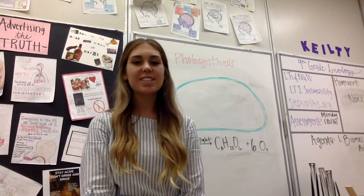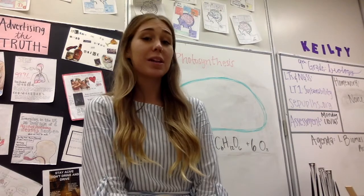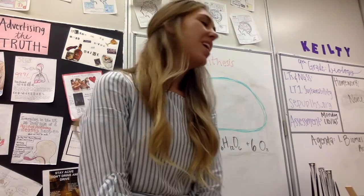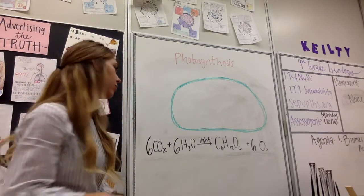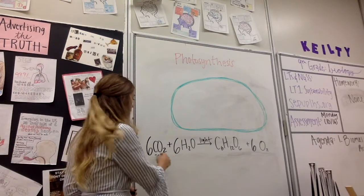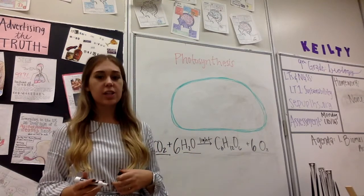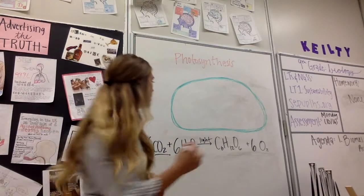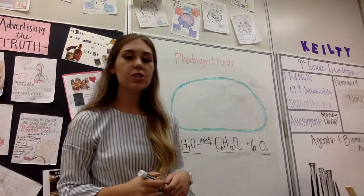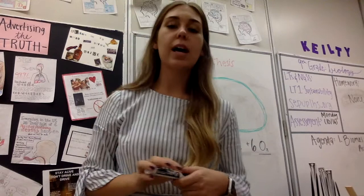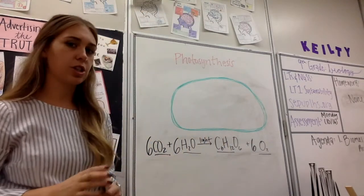We're finally getting around to the second video on photosynthesis, and we're not in my living room this time. We should all be very familiar with the basic formula for photosynthesis. We start off with carbon dioxide, water, and energy, and that's going to give us glucose and oxygen. In this video, we're actually going to look inside the chloroplast and see how this reaction is occurring.